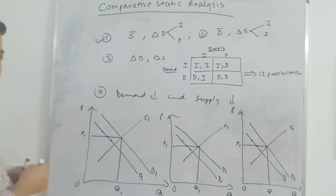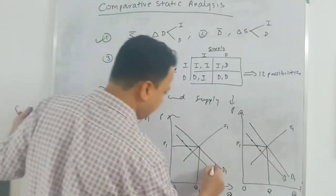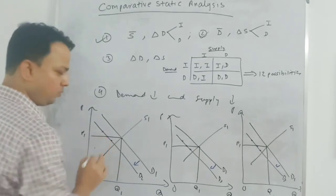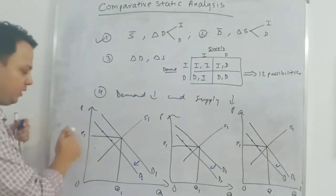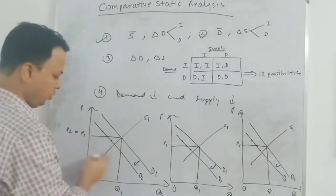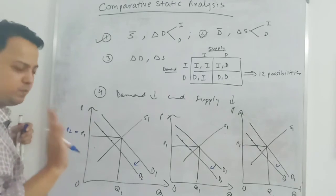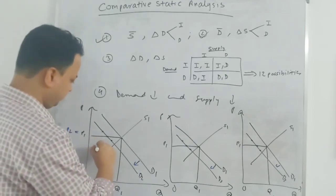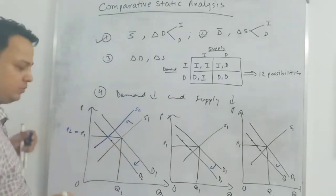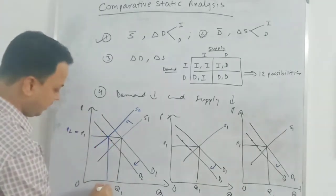I am shifting the supply curve leftward. Demand decreases, supply also decreases and also shifts leftward. At the new equilibrium, I am keeping the price the same — P1 equals P2 — and equilibrium quantity is lower at Q2. Drawing S2, at the new equilibrium price remains the same as the old equilibrium price and equilibrium quantity is lower.